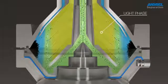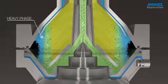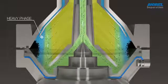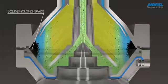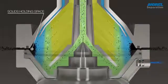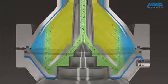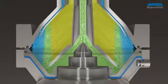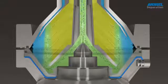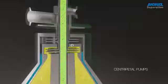The light phase is concentrated in the inner part of the bowl, while the heavy phase is forced towards the outer part. Solid particles are forced towards the outer part of the bowl, accumulating in the solids holding space, and are discharged automatically in very precise shots at regular preset intervals.